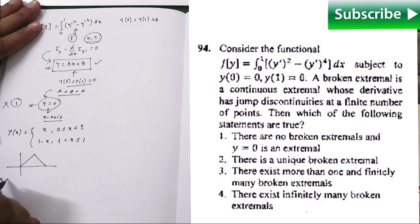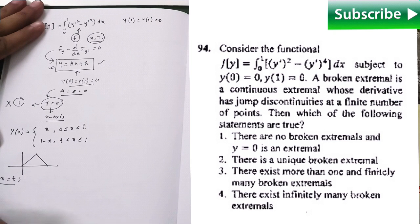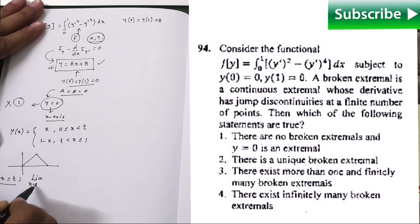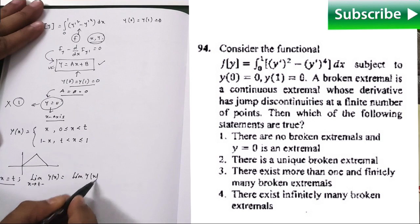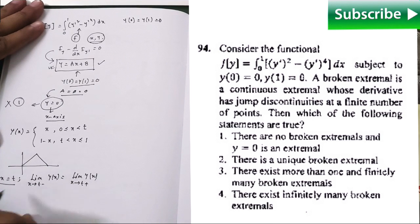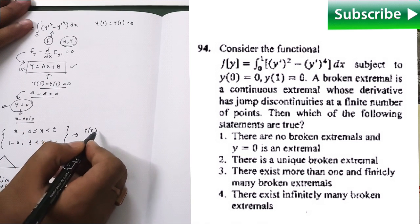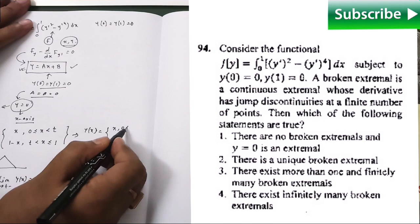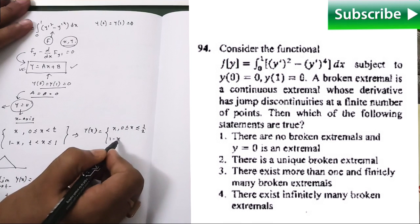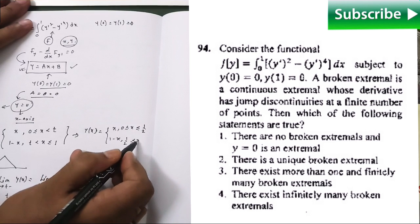So, as we have constructed at x equal to t, if we simply use the condition of continuity, then what we are having is t equals t equals half. So finally, our function will be of this form: y(x) equals x when 0 ≤ x ≤ 1/2 and 1 minus x when 1/2 ≤ x ≤ 1. So here it is continuous also.